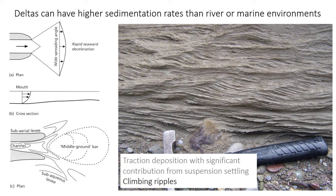The bar may also contain erosional surfaces called reactivation surfaces within it, because it forms during occasional high-energy flood events. Climbing ripples are a key feature — if you see them, that could point towards a delta environment as opposed to a regular fluvial or some other kind of shallow environment.